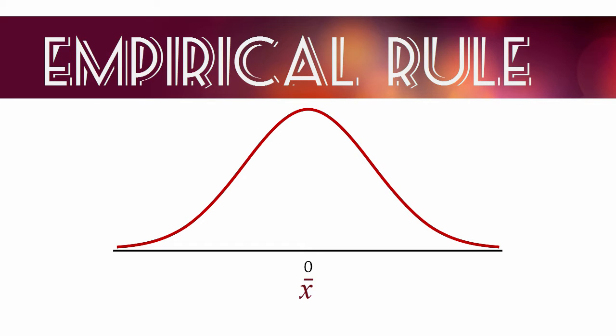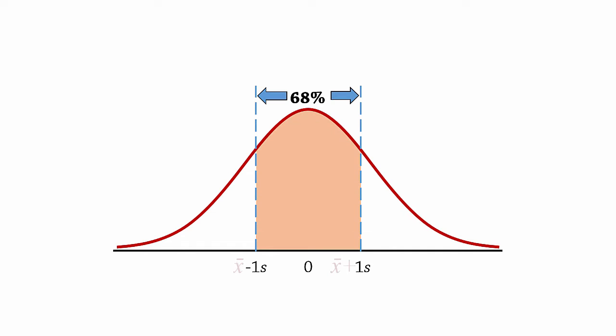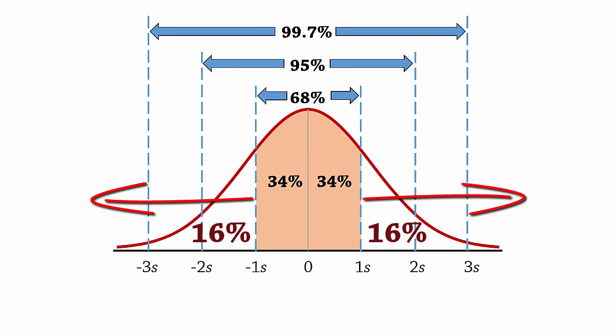The Empirical Rule states that approximately 68% of all values fall within one standard deviation of the mean, about 95% within two standard deviations, and about 99.7% within three standard deviations. Since we have 68% here, the area on either side of the mean is 68 divided by 2, which gives 34% each. That means we have about 16% on each tail.